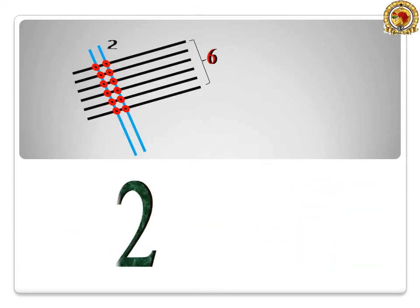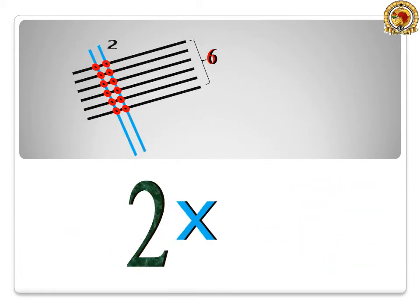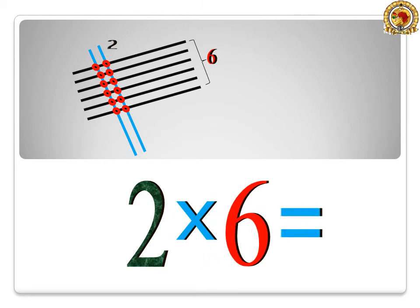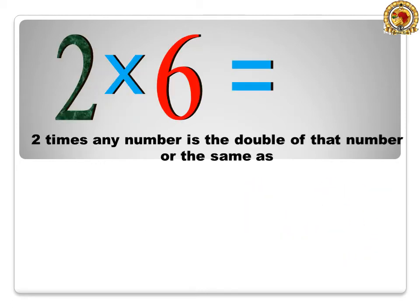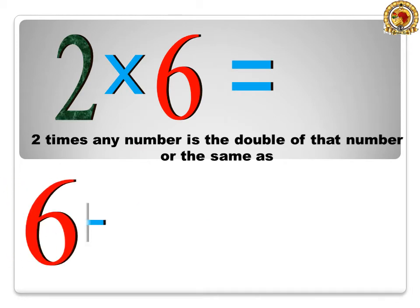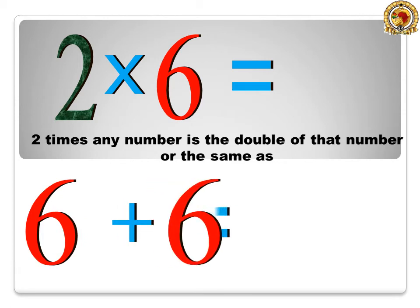2 times 6 is equal to 12. 2 times any number is the double of that number, or the same as 6 plus 6 is equal to 12.